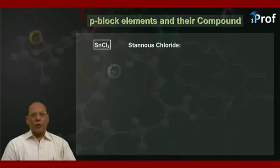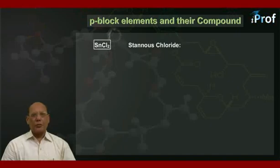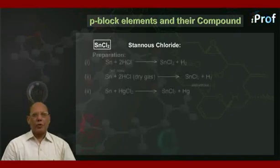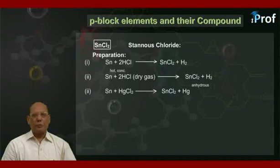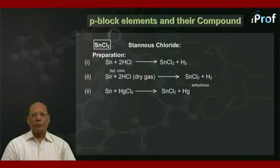The next compound is SnCl₂, known as stannous chloride. Preparation method one: Sn plus 2HCl, hot and concentrated, gives SnCl₂ plus H₂.